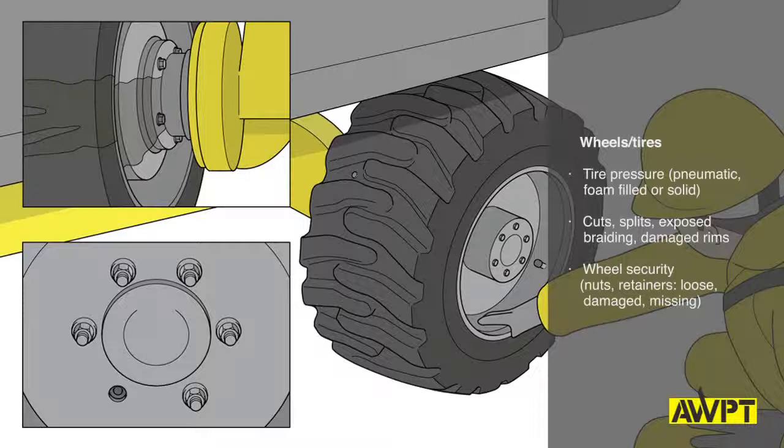Check the wheel security by looking for loose, damaged or missing nuts or retainers. There should be no leaking on either side of the wheel hub.